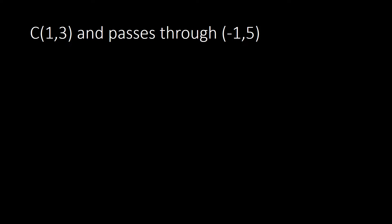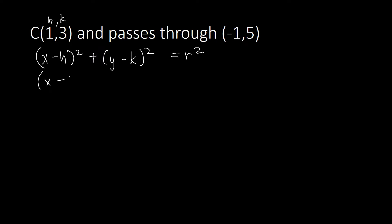Let's recall that (x - h)² + (y - k)² = r². That's our standard equation of the circle. If you've got the center with (h, k) as the coordinate and a point which the circle passes through, let us first plug in our coordinate of the center. So we have (x - 1)² + (y - 3)² = r².